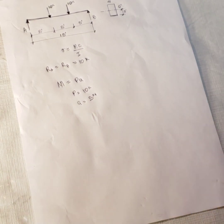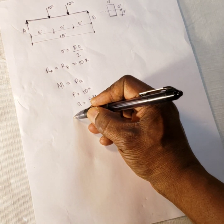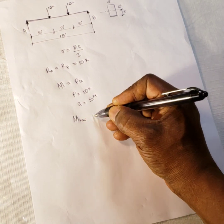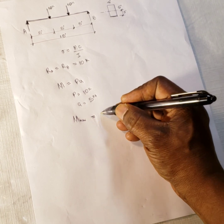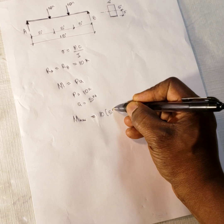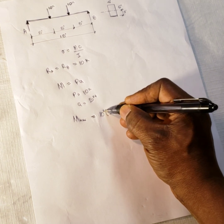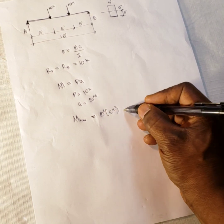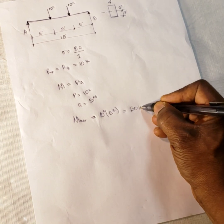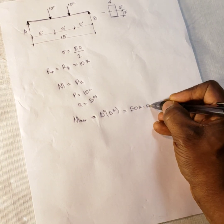So with this, you can solve your moment right away. So moment, the maximum moment is going to be P, which is ten multiplied by five feet. Five feet, ten kips. So that gives you fifty kip feet.